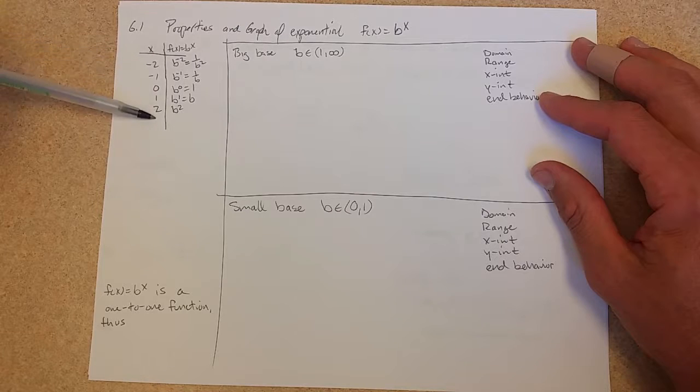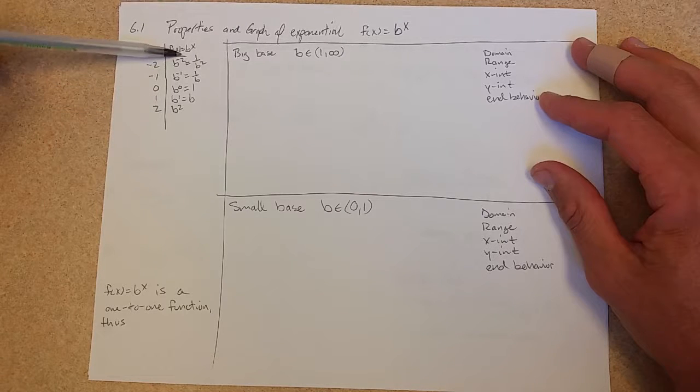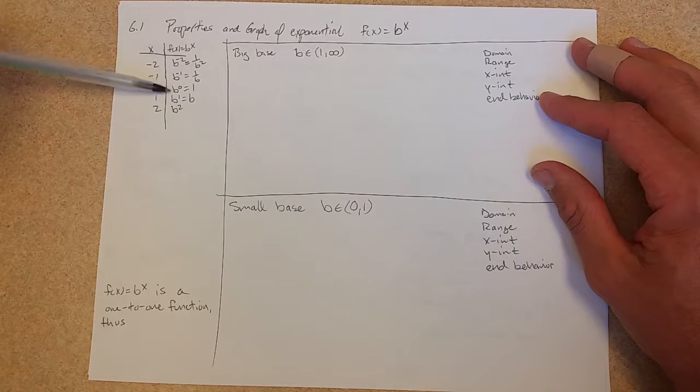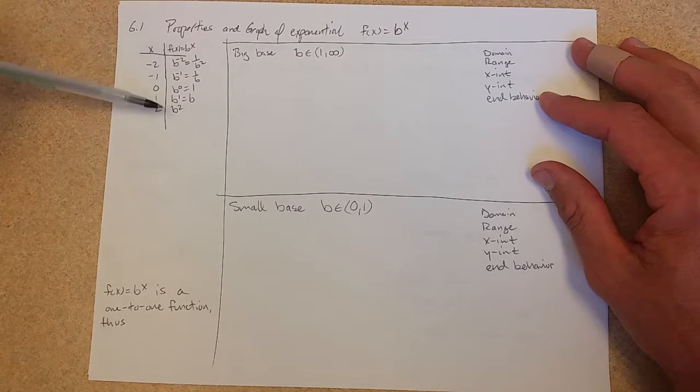I'm just going to go from negative 2 to positive 2, and b to the negative 2 power is 1 over b squared, b to the negative 1 is 1 over b, b to the 0 is 1, b to the 1 is b, b squared.